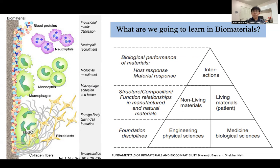From the physical science perspective, physical science means non-living materials such as metal, polymer, and ceramics. We need to understand in detail what kind of material it is, what its properties are, and what its structure is — we need to understand non-living materials.